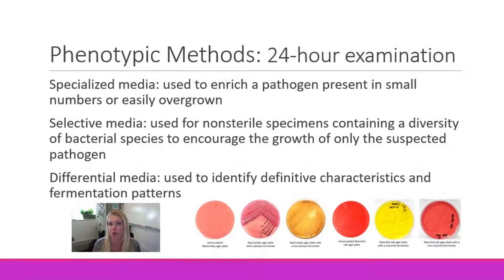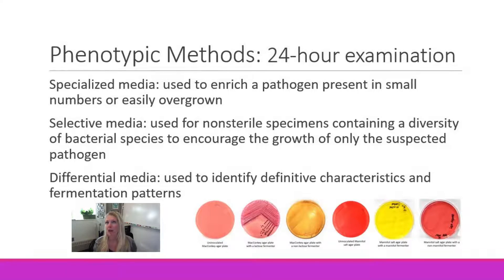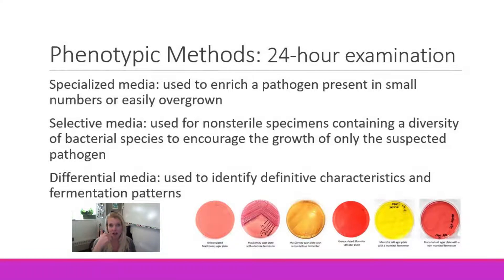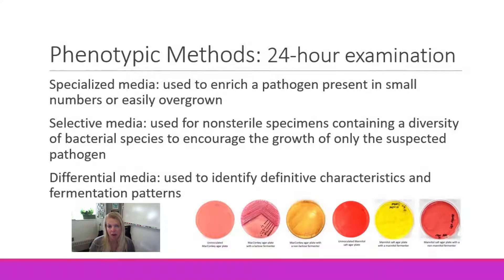When you're looking at a stool sample, you're going to use media that will really try to cut down on the normal flora that's present. When you're looking at a respiratory sample like a sputum sample, you're going to use media that is biochemically supportive of the growth of bacteria that we typically see causing respiratory tract infections. A urinary tract infection is going to utilize a different set of media. It all has to do with being able to support the growth of the most likely pathogens in that part of the body, but also being selective for those pathogens and differentiating them from non-pathogens.